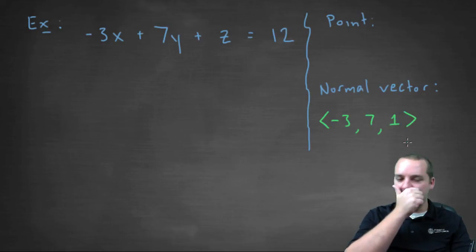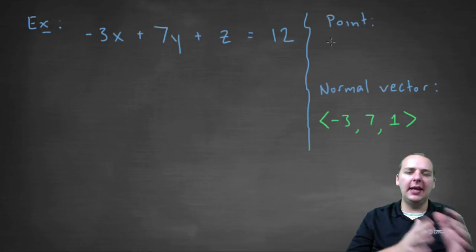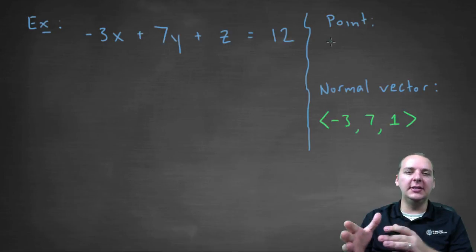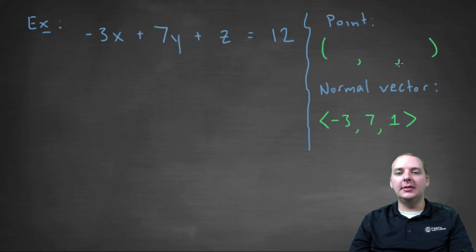Now what doesn't seem quite as straightforward is the point in the plane, because for that you kind of needed the X knot, the Y knot, and the Z knot, where it's equal to zero, and this is equal to twelve. So how can you determine a random point in the plane? Well, you just have to find some X, Y, Z that makes the equation be true. So just think about it, if nothing else, you can let two of the coordinates be zero. So like for example, if the Y was zero and the Z zero, negative three X equals twelve, the X would have to be negative four.